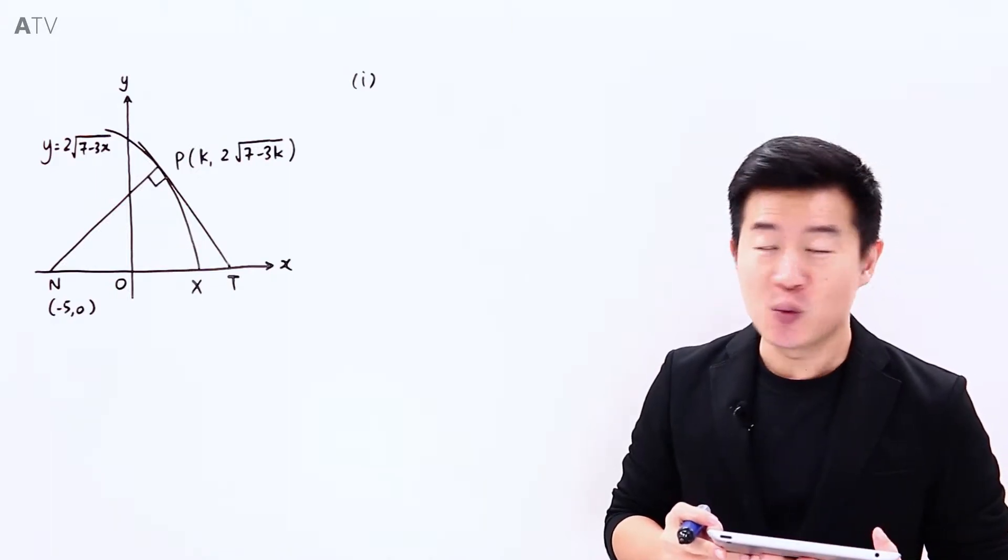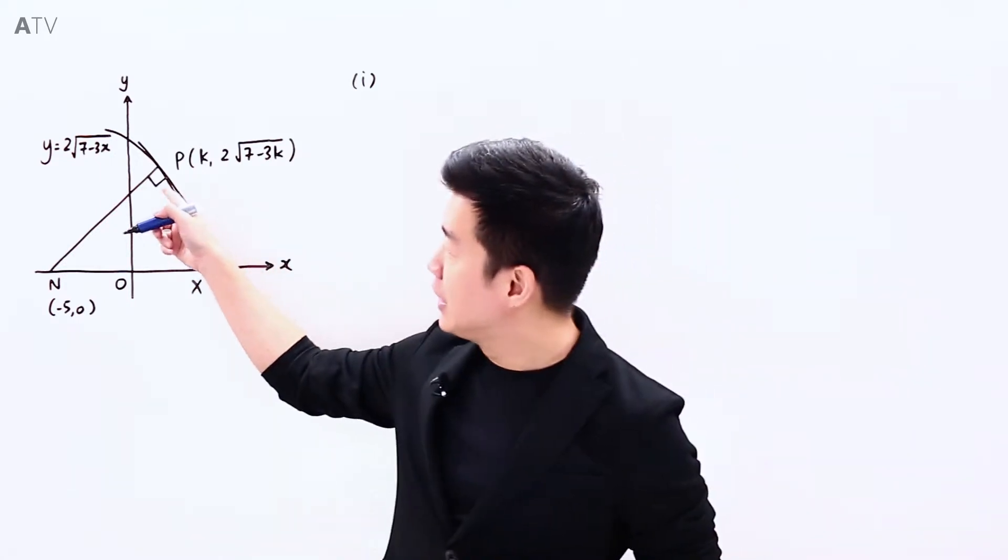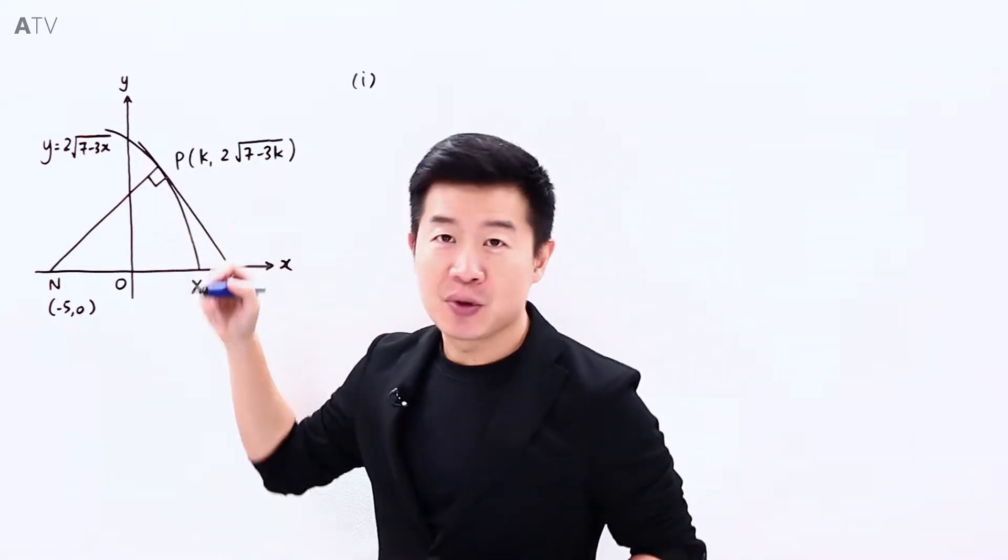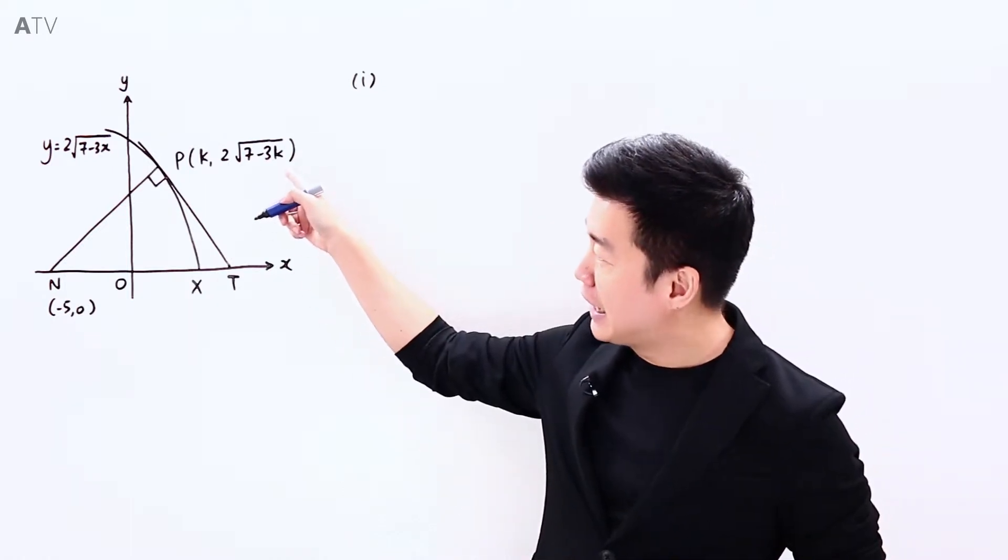To prove that k is equal to 1, what we are going to do is find the equation of the normal to the curve at point P. Because this equation of the normal is going to carry k, and at the same time,